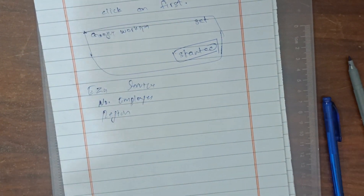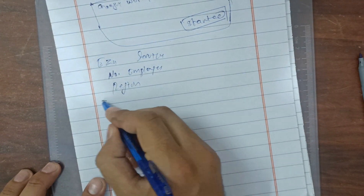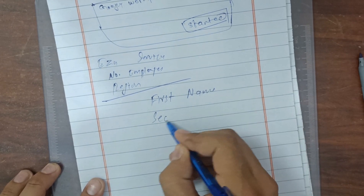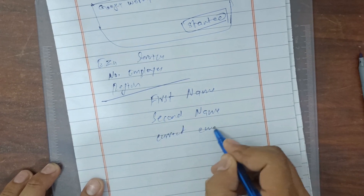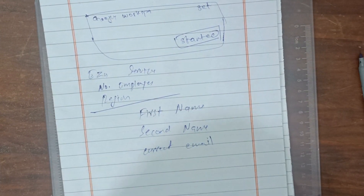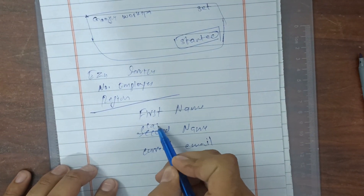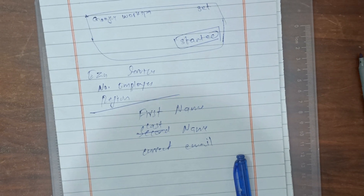When you click Next, it will ask for three things: your first name, your last name, and your current personal email address. Just fill in your first name, then your last name, and then the email address you currently use.